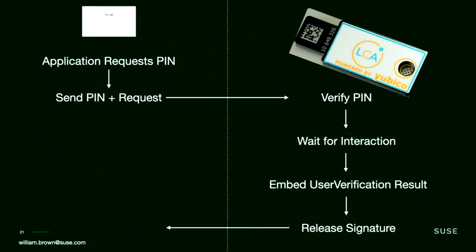The authenticator validates that the PIN is correct, and if not, it will not proceed. Only if correct will it wait for interaction — I have to physically touch the device. If this was malware or someone remotely controlling my computer, they can't fake that interaction. I have to be physically at the device and have put in that PIN. This interaction and PIN verification are embedded in the signed result, giving us cryptographic proof that I both touched the device and interacted with it.